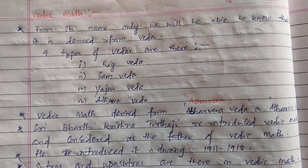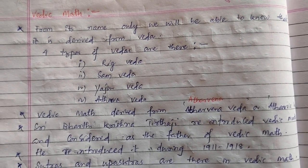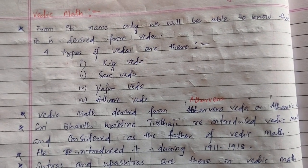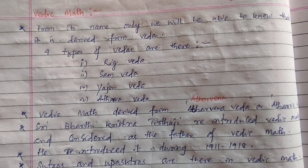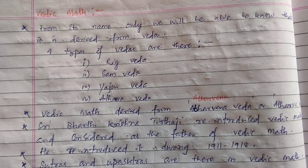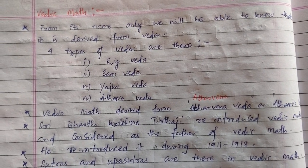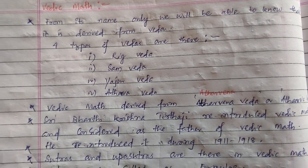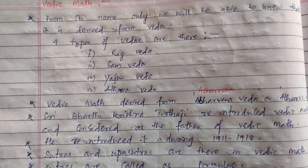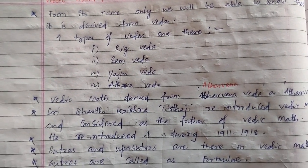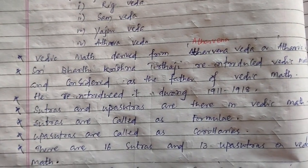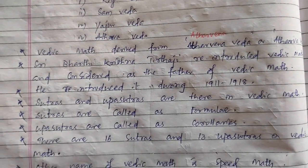Today we are going to read about Vedic math. From its name you will be able to know it came from the Vedas. There are four types of Vedas: Rig Veda, Sam Veda, Yajur Veda, and Atharva Veda. Vedic math is derived from Atharva Veda.